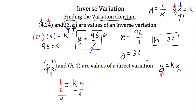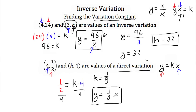We get k is equal to 1/8. So now that k equals 1/8, my direct variation equation is y is equal to 1/8 times x. Now we look at our second point (h, 4) and we want to find h. We'll take this equation and plug in 4 for y, and whatever we get for an x-value will be our h.